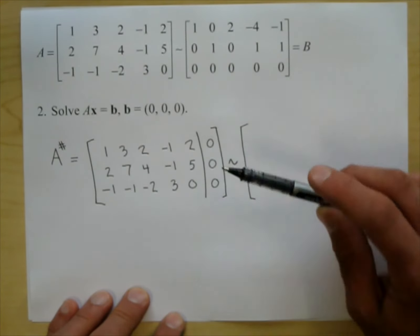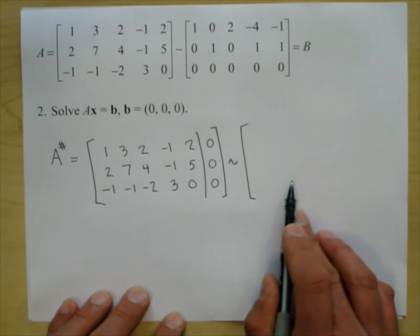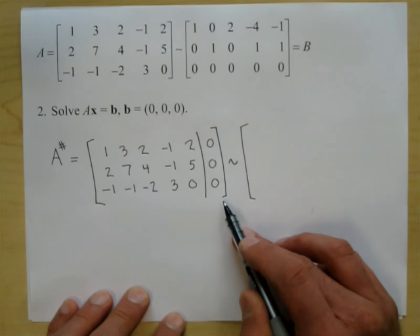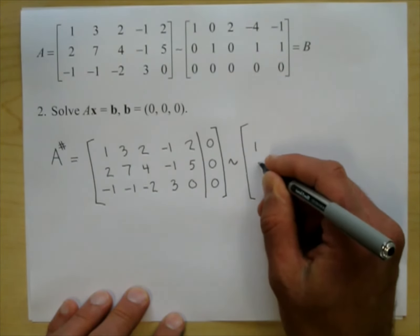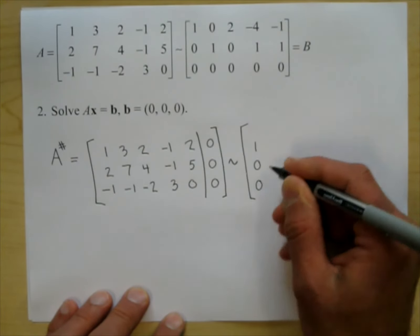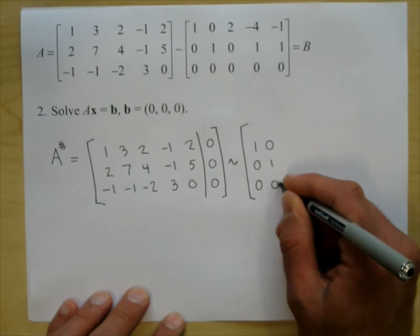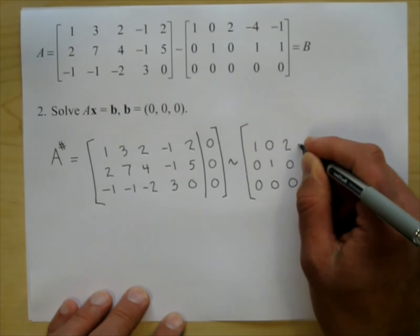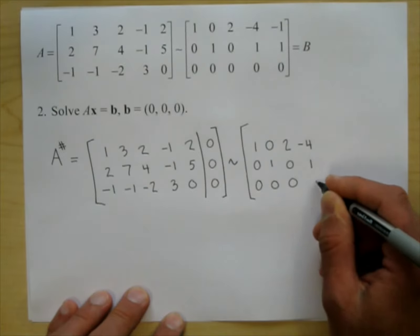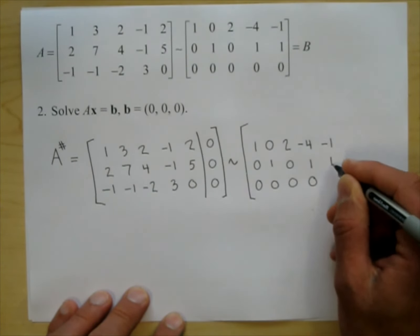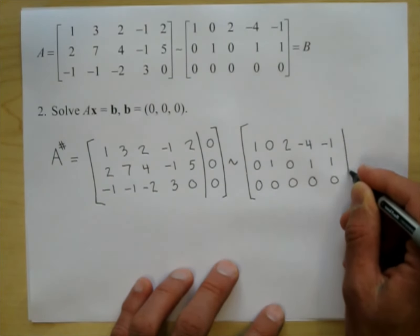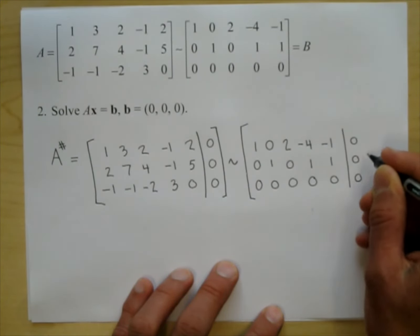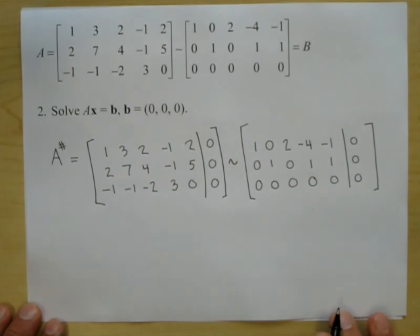When I go to do row operations on this augmented matrix, it would be the same row operations I would do going from A to B. Anytime I do a row operation, this column is always going to stay zeroes — negative two times zero plus zero gives me zero. So I write matrix B down and the right-hand side is zero, zero, zero as well.